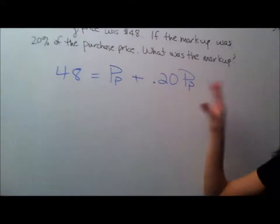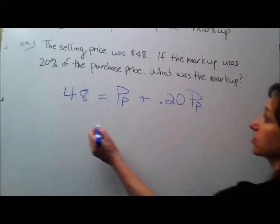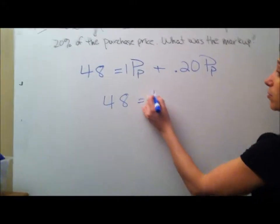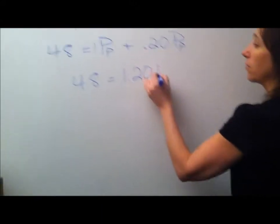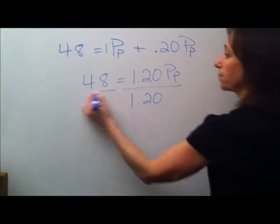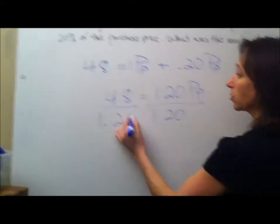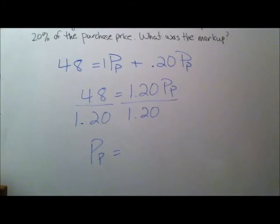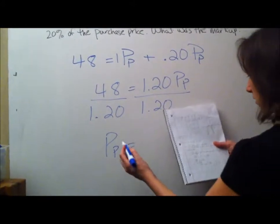Now we have one variable and one equation. We just have to solve it. So we get $48. There's a 1 there. Just keep that in mind. So that would be $1.20 of the purchase price. Divide both sides by $1.20. So, and we get the purchase price is, if we divide, we would get $40.